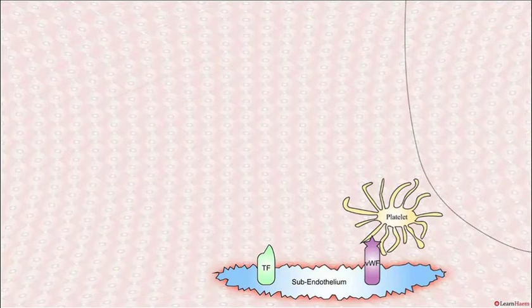You should think about the generation of a clot in the same way as you think about building a house. You're going to start by building the scaffold, and the scaffold is the platelet-rich plug.